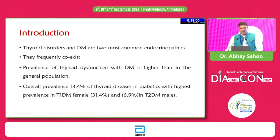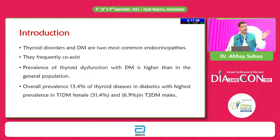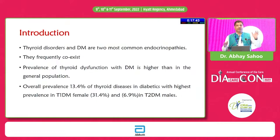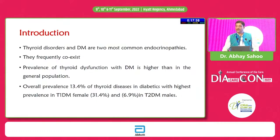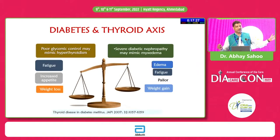Thyroid disorders and diabetes are probably the two most common endocrinopathies we classically see in clinical practice, and they frequently coexist. The prevalence of thyroid dysfunction in diabetes is much higher compared to the general population — overall prevalence is 13.4%. Sex-wise, females have a much higher incidence, close to 32%, whereas in males it is 6-7%, showing a clear link between diabetes and thyroid.